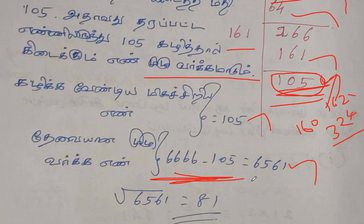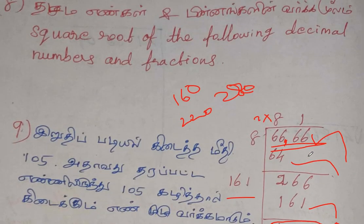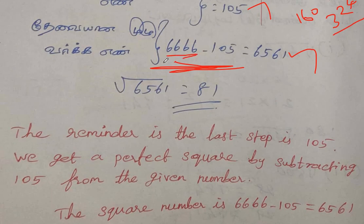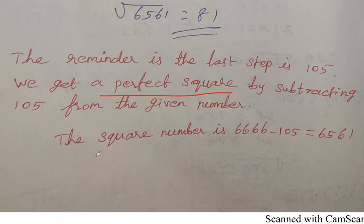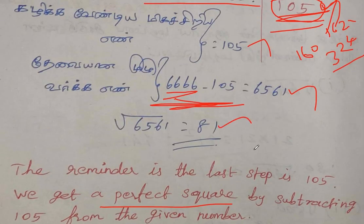So we can get the answer. The answer is 161. The remainder in the last step is 105. We get a perfect square number by subtracting 105 from the given number. The given number is 6561. We get a perfect square number by subtracting 10.